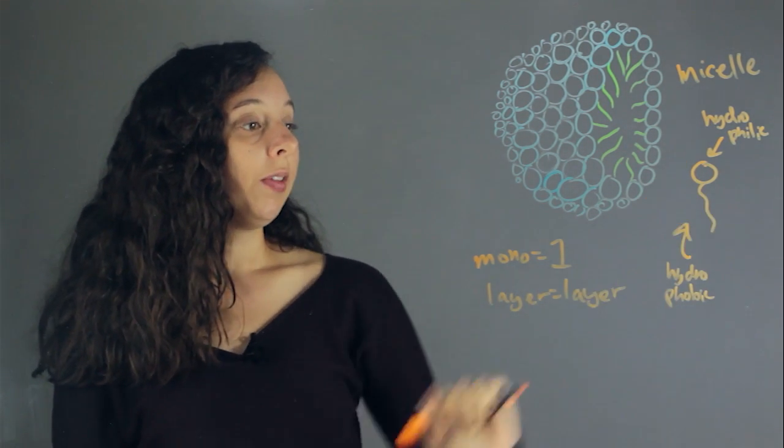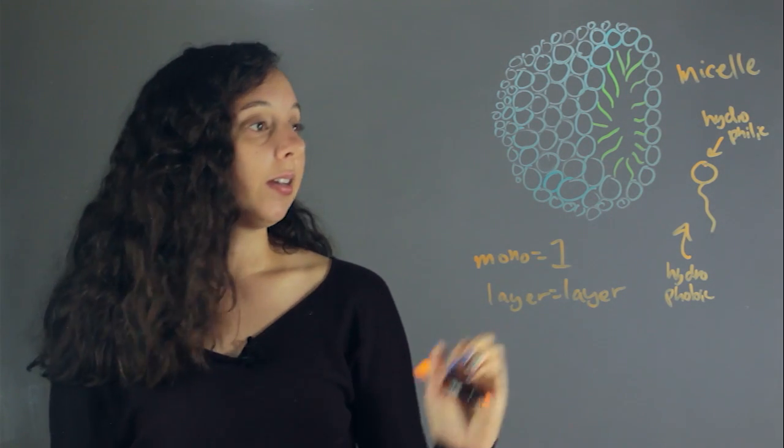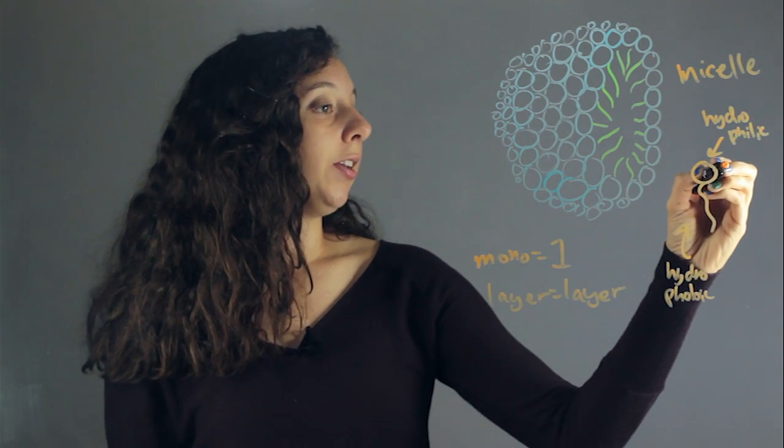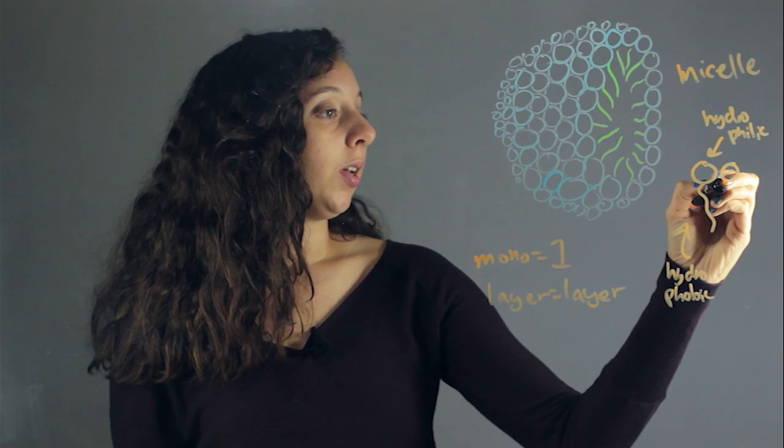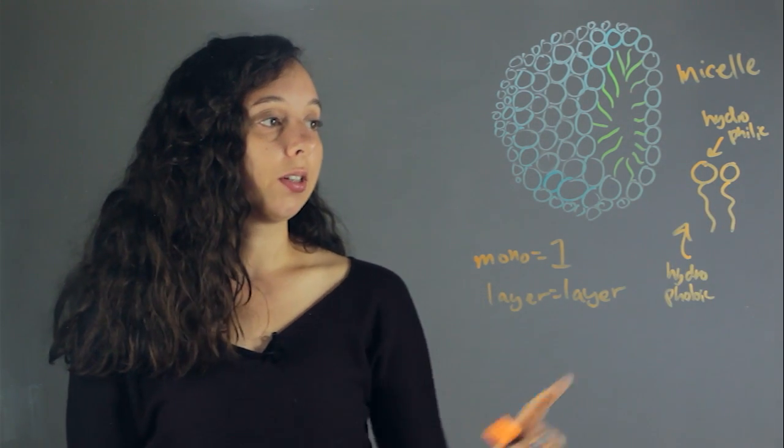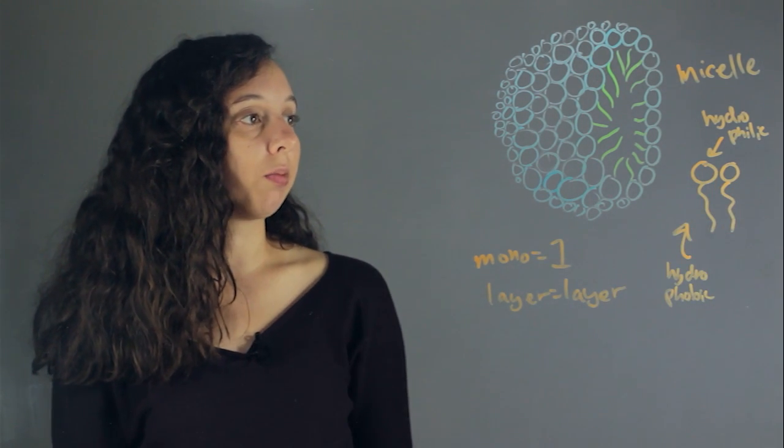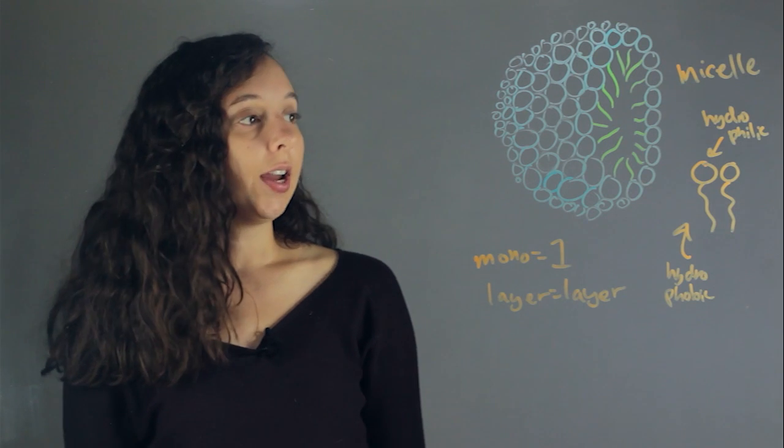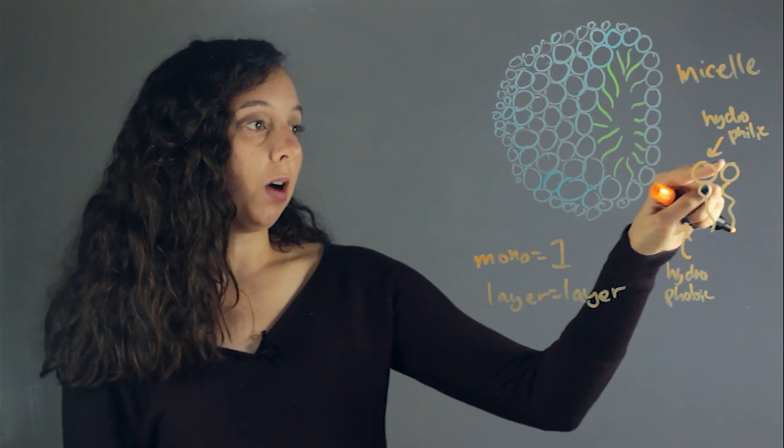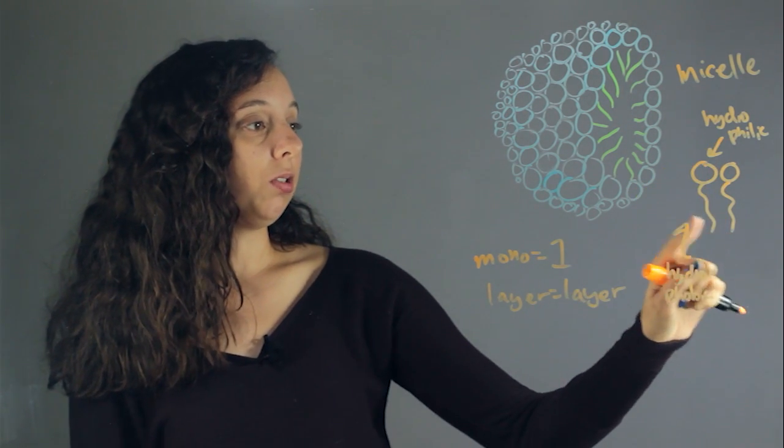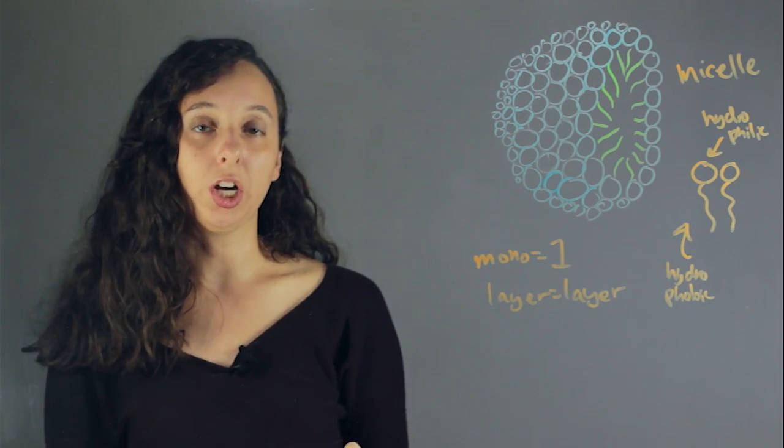So here's your molecule, and it has these two segments. If you have another one floating out there, it will align right next to this one, like this, because remember that like attracts like. So these two hydrophilics want to bond with each other, and these two hydrophobics also want to bond with each other.